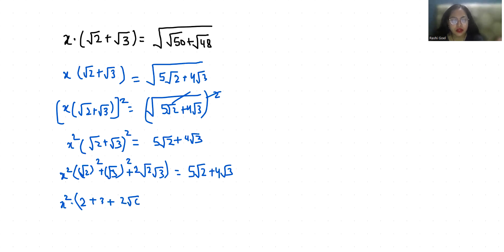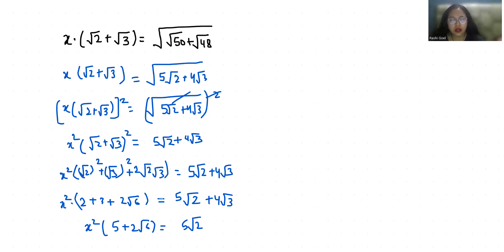So x² times (5 + 2√6) equals 5√2 + 4√3. Therefore x² equals (5√2 + 4√3) divided by (5 + 2√6).